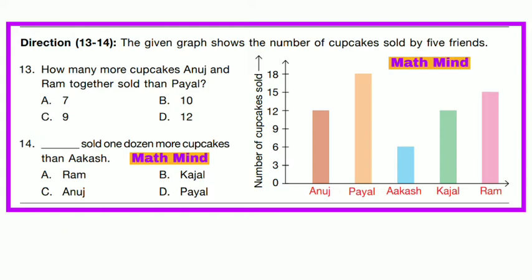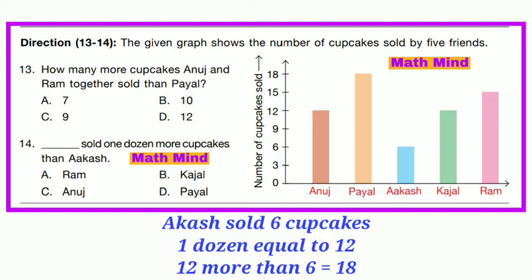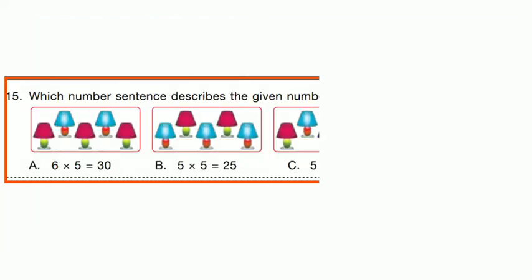Question No. 14: Who sold 1 dozen more cupcakes than Akka? Akka sold 6 cupcakes. 1 dozen more = 6 + 12 = 18. Payal sold 18 cupcakes. So the correct answer is D — Payal sold 1 dozen more cupcakes than Akka.